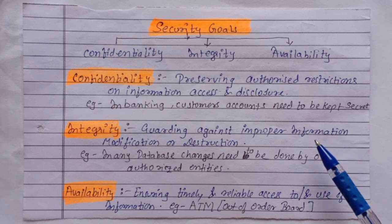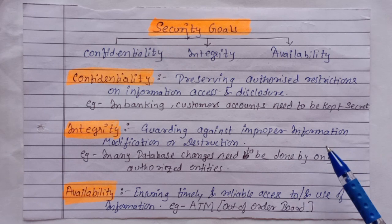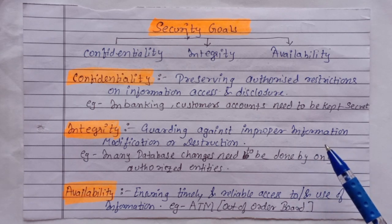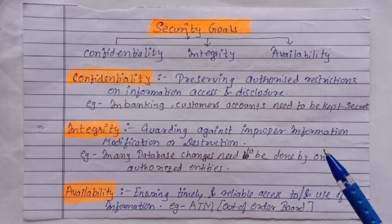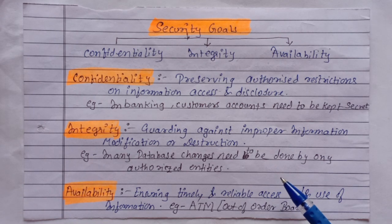Next is integrity. Integrity is guarding against improper information modification or destruction. Since information needs to be changed constantly, only the authorized entity can change the information. For example, in any database, some data needs to change, but the changes can be done only by authorized entities.